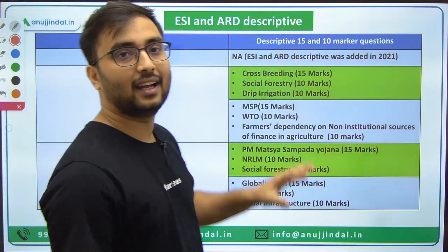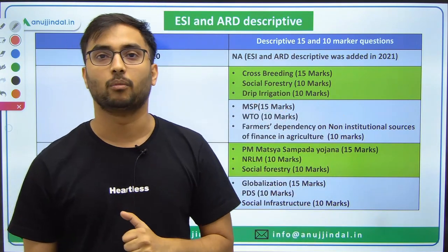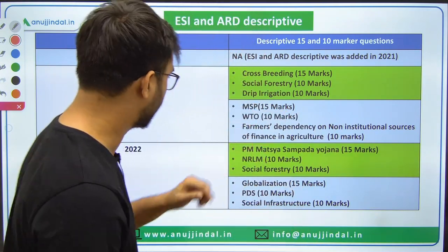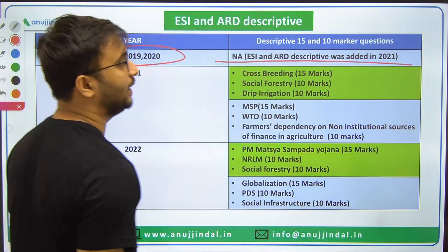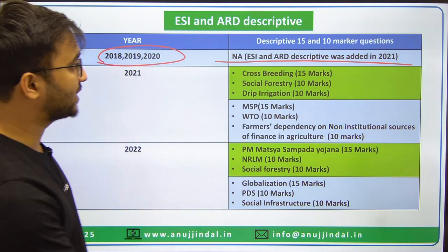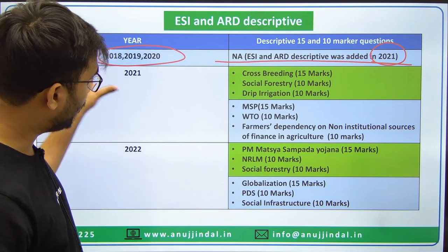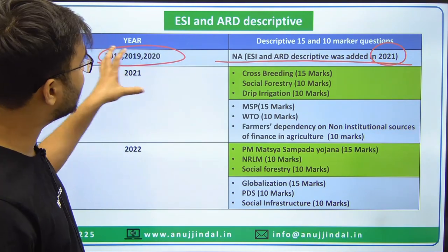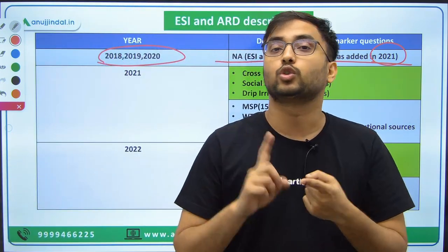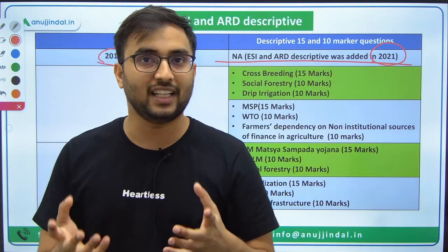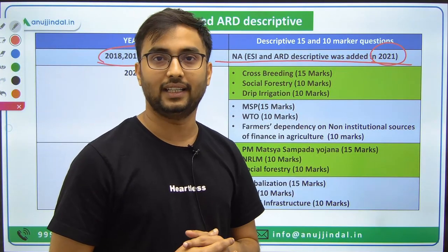Now comes ESI and ARD Descriptive — the game changer of the NABARD Phase 2 exam. In 2018 and 2019, ESI and ARD descriptive was not there. It was added in 2021. When it was added, the cutoff dropped automatically because students couldn't manage or were not ready to write descriptive answers related to ESI and ARD sections.